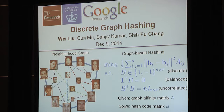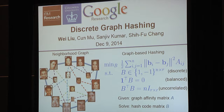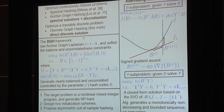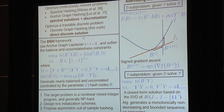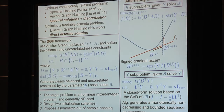The second constraint is the balanced constraint, which requires the hash bits to have maximum information entropy. The last one is the uncorrelated constraint, which restricts the hash codes to have minimum redundancy. Previous methods such as spectral hashing and anchor graph hashing both relax to a continuous problem. Their solutions are the spectral solutions — particularly the lowest eigenvectors of the graph Laplacian — followed by discretization, mostly by thresholding. In this work, we optimize a tractable discrete problem using discrete optimization and achieve a direct discrete solution instead of the thresholding spectral solutions.